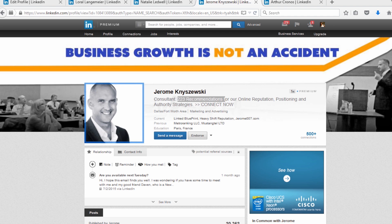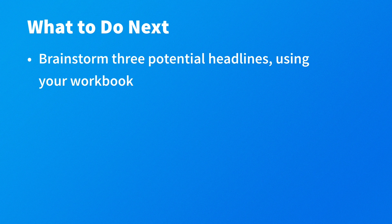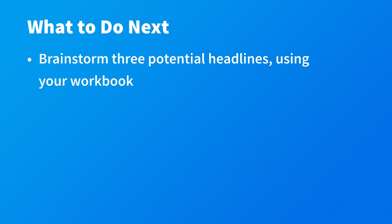So what should you do next? Brainstorm three potential headlines using your workbook. It's going to ask you to list the top results you have achieved for your clients — whether you doubled their business, tripled their business, what did that mean in income? How many leads do you generate for clients, or if you have software, how much time or money does that save them compared to what they're currently using? Think about the top results you've provided and the top benefits of your product or service and write those out.